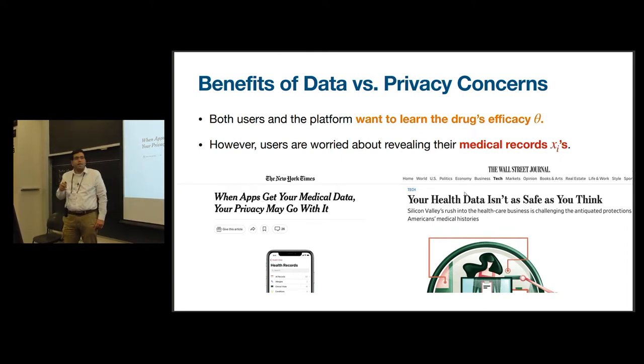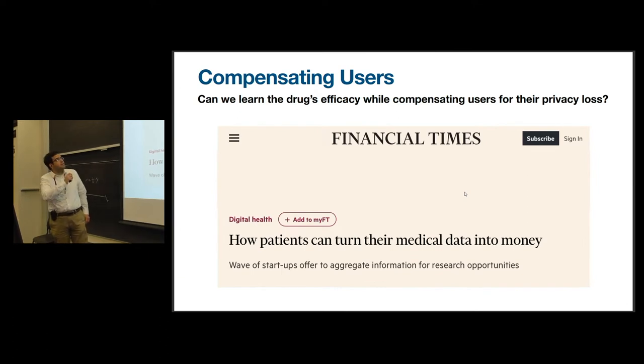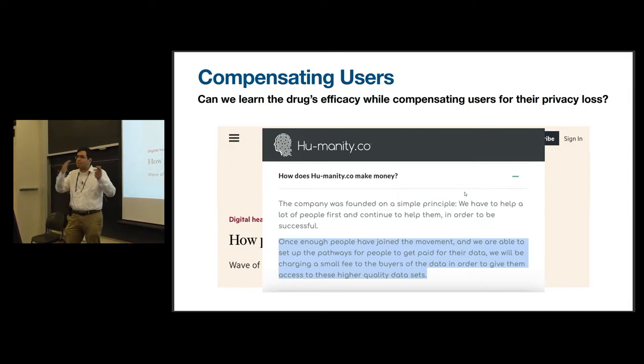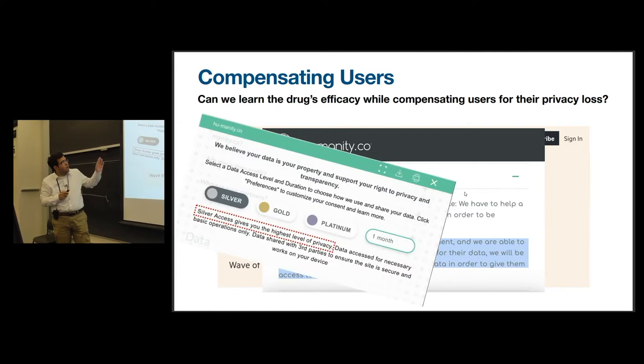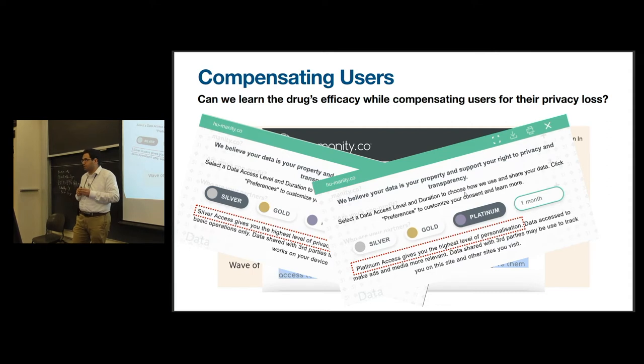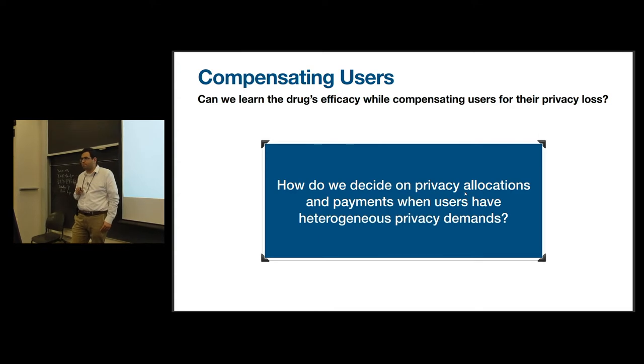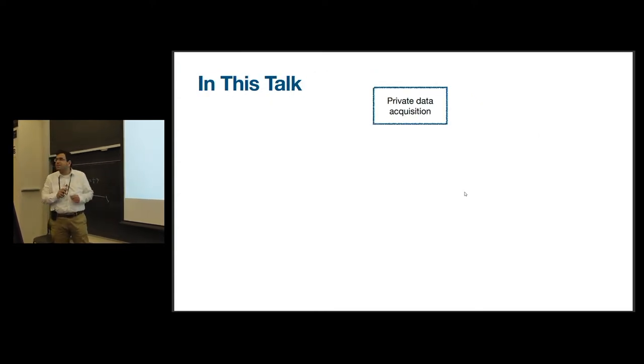As you can see, the privacy issue around these apps that collect medical data has attracted a lot of attention over the past couple of years. The question is, can we still learn the drug efficacy while we somehow compensate users for their privacy loss? For instance, this article on Financial Times talks about paying users in exchange for their medical data. The company offers a spectrum of options, from the ones that provide the highest level of privacy to the ones that provide the best estimate. How should we decide on privacy allocations and payments when users possibly have heterogeneous privacy demands?